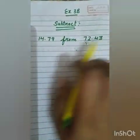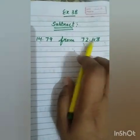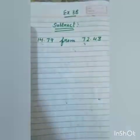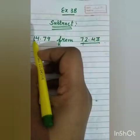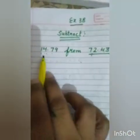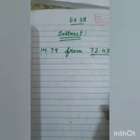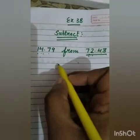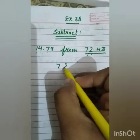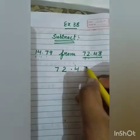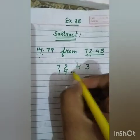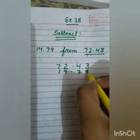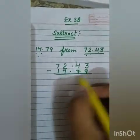This is the first part. You have to subtract this number from this number. Firstly, the first step is you have to convert this number into like decimals. But it is already in like decimal, so there is no need to change it. Write the bigger number on top: 72.43, and then 14.79 below it. Then subtract.